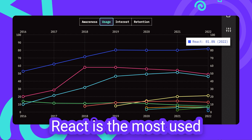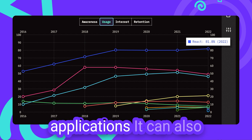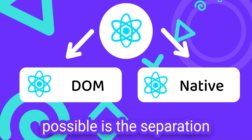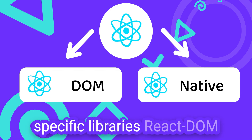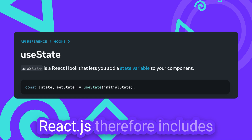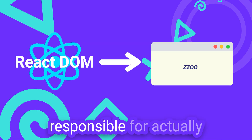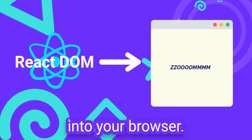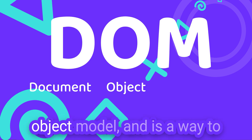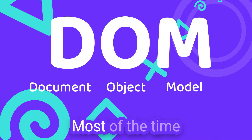React is the most used JavaScript framework for building user interfaces. Although it is most popular for building modern web applications, it can also be used for building other interfaces, like iOS or Android applications. What makes this possible is the separation of React.js and the platform-specific libraries like React.DOM for the web and React.Native for mobile user interfaces. React.js therefore includes shared logic for state management, rendering and component management, while React.DOM is responsible for actually rendering the interface into your browser using APIs provided by the browser to manipulate the HTML. DOM stands for Document Object Model and is a way to programmatically access and modify HTML documents, most of the time using JavaScript.